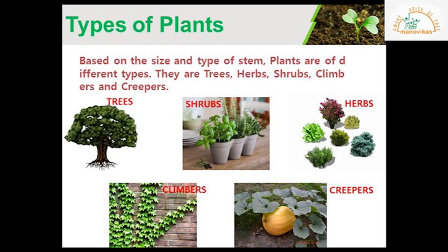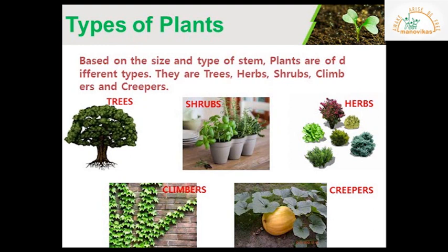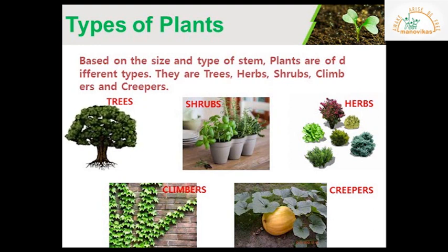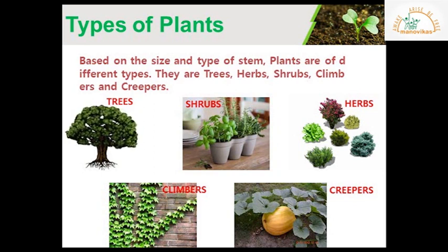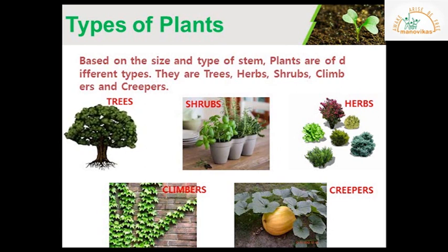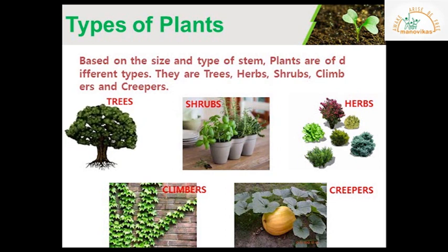There are many types of plants around us. Plants are of different shapes and sizes. There are mainly five types of plants based on the size and type of stems. They are: trees, shrubs, herbs, climbers, and creepers.